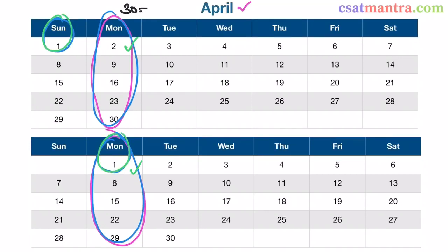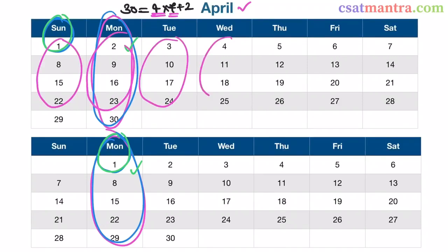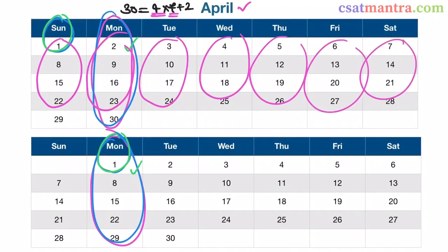30 equals 4 × 7 plus 2. We have 7 days a week, so every day comes a minimum of 4 times. Whereas 2 days will come a 5th time. In this case, Sunday is coming a 5th time and Monday is coming a 5th time.